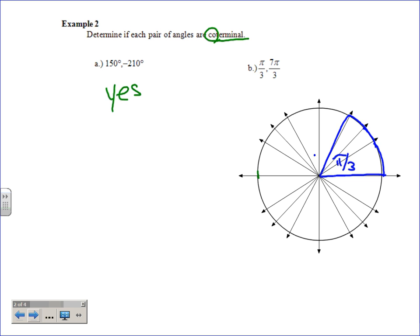How about 7 pi over 3? That's just a little over, what, that's 2 and how much? And 1 third pi? Do you believe that's going to end in the same place? Yes. Yes, you do.